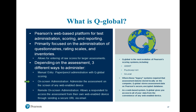New to Q-Global is our remote on-screen administration. This method functions in a similar capacity to the on-screen administration and sees examinees or respondents being administered the assessment digitally. However, instead of the assessment being administered on the examiner's computer, the respondent is emailed a secure URL, allowing them to complete the assessment on their own web-enabled device. Some assessments and forms that take advantage of this method include the BASC-3 parent and teacher forms, the Vineland-3, as well as the Shaywitz dyslexia screen.